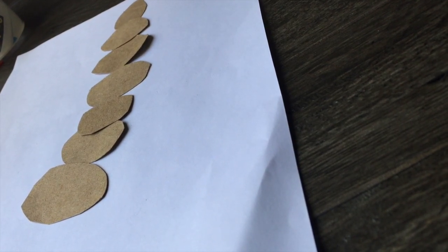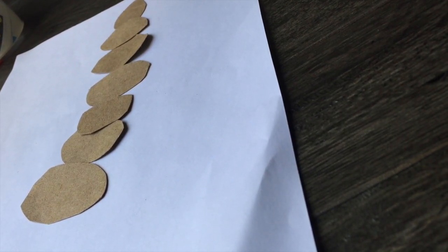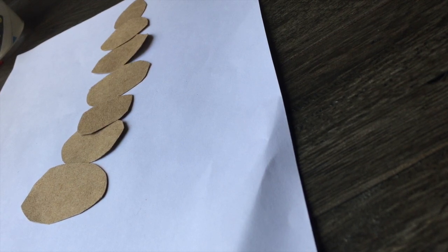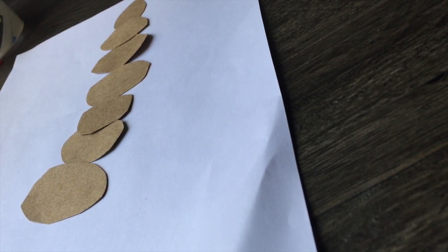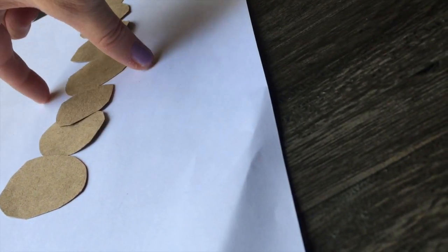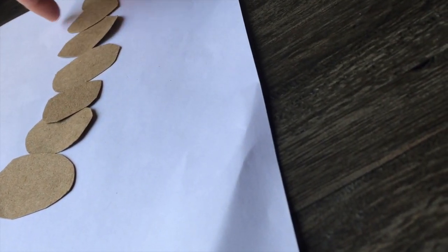Now I'm going to make the legs out of this yarn. I want to make the right number of legs for my centipede. One, two, three, four, five, six. I'll make six pieces of yarn.